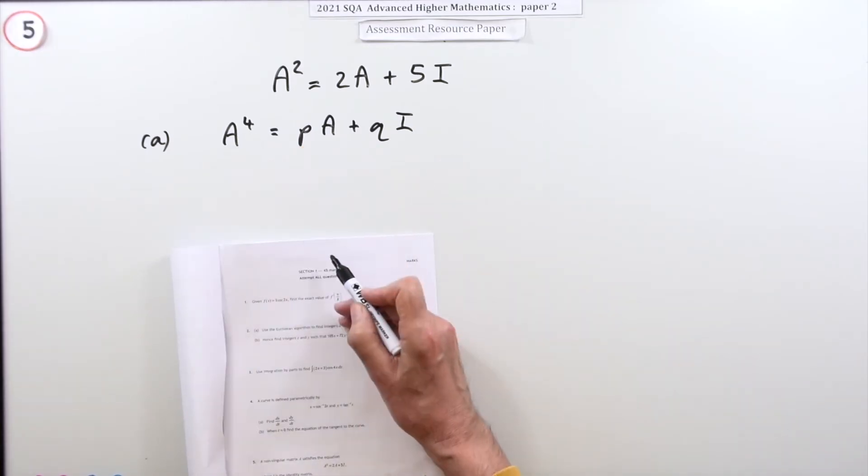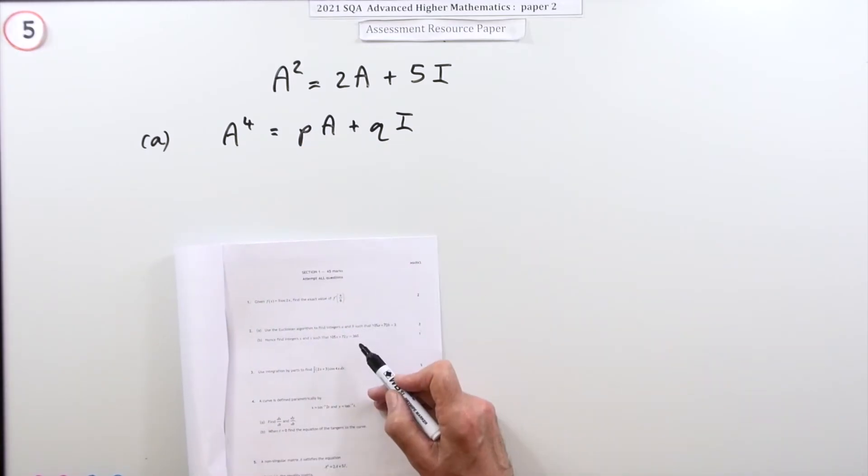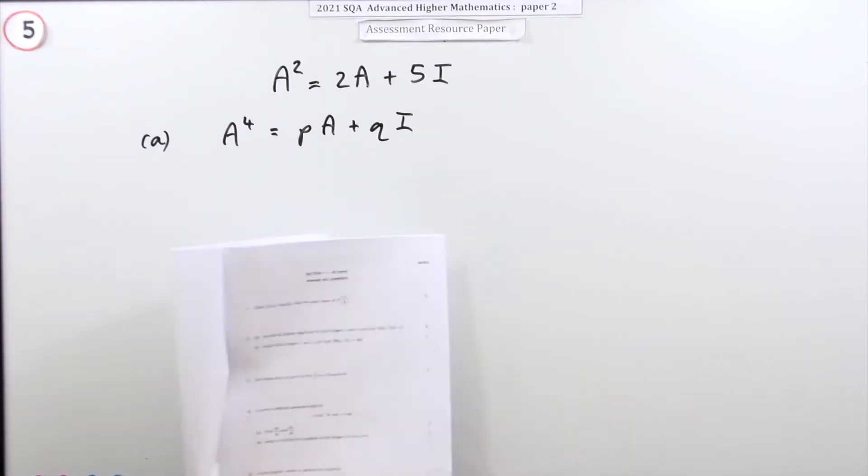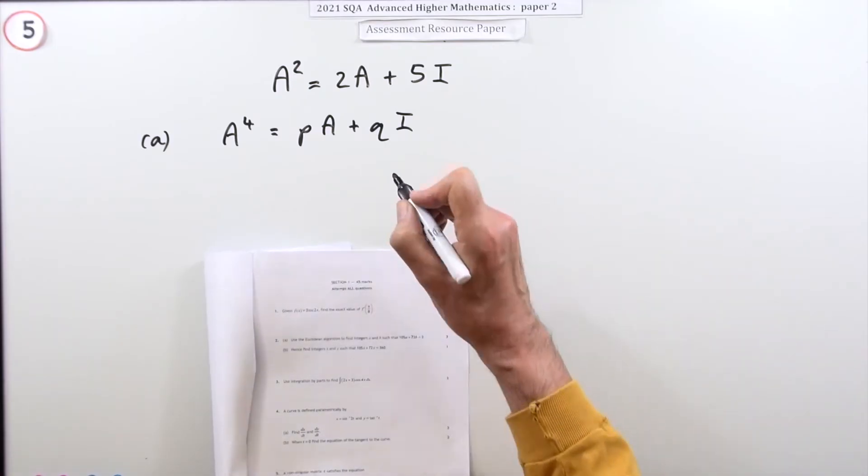It asks, if that's the case, what about A to the power four? Write it the same way. It says express it in the form, so it doesn't actually say state the values of p and q, you just write it the same way.